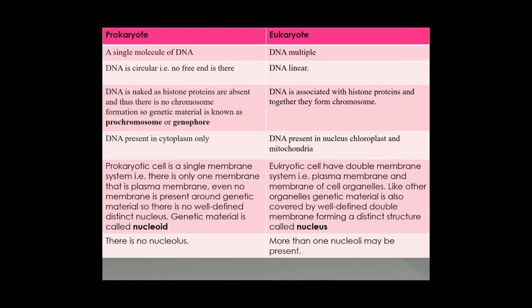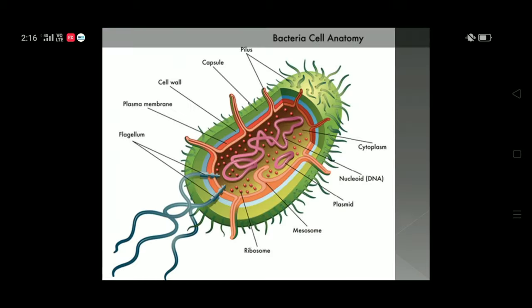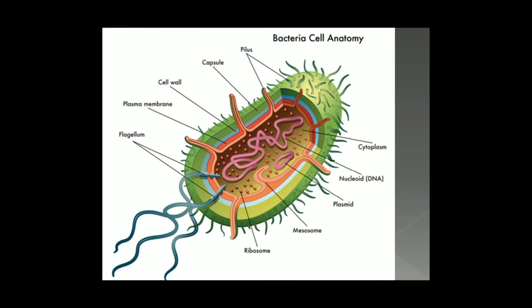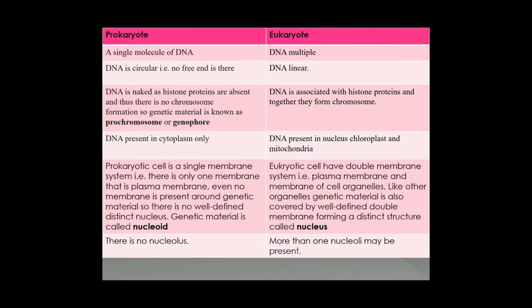The next point is that a prokaryotic cell is a single membrane system. As we observe in this structure, the plasma membrane is present as a single unit around the cell. There is no other membrane, not even surrounding the genetic material to form a nucleus. So a prokaryotic cell is a single membrane system, and as there is no membrane around any organelle or around the genetic material, this DNA is directly present in the cytoplasm without any covering. So there is no well-defined nucleus — there is a nucleus-like structure. Nucleus plus oidus (meaning 'like structure') gives us nucleoid. So the genetic material of a prokaryotic cell is known as nucleoid.